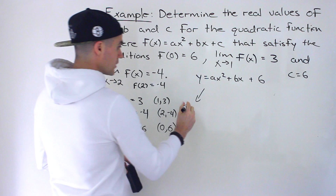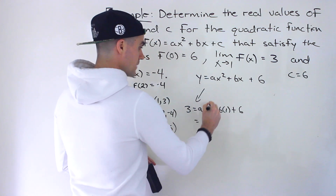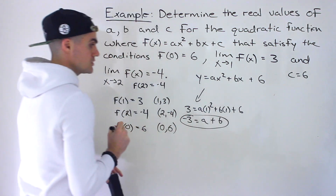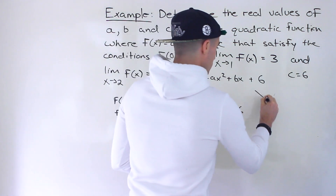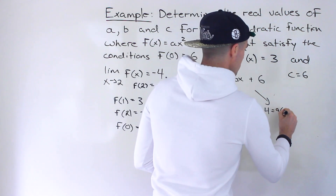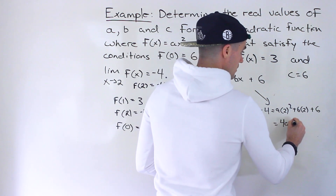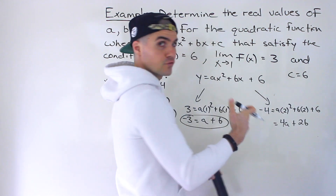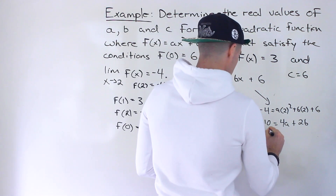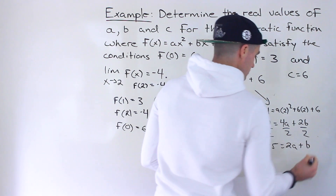Plugging in the point (1, 3): 3 equals a times 1 squared plus b times 1 plus 6. That simplifies to a plus b plus 6 equals 3, so a plus b equals negative 3. Next, plugging in the point (2, -4): negative 4 equals a times 4 plus b times 2 plus 6, giving 4a plus 2b equals negative 10. Dividing everything by 2 gives us 2a plus b equals negative 5.